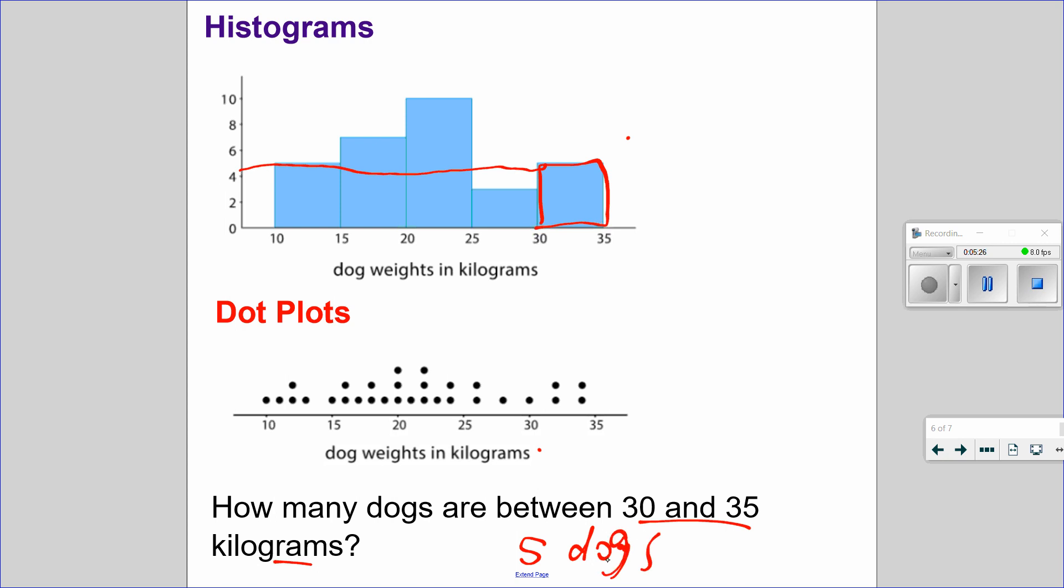If you do not want to use the histogram, we could have used the dot plots. How many are between 30 and 35? Five dogs.